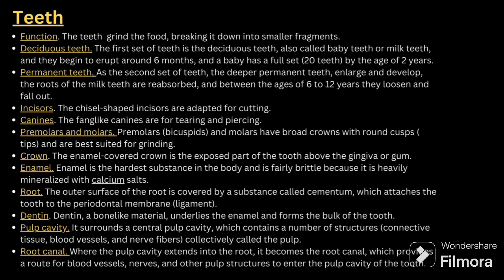Regarding teeth, the function is that teeth grind the food. We have deciduous teeth — the baby teeth — and permanent teeth, which develop from 6 to 12 years. Incisors are mainly for cutting, canines for tearing and piercing, and pre-molars and molars for grinding. The parts of a tooth include the crown, enamel, root, dentin, pulp cavity, and root canal. It is not necessary to explain all these points; saying the accessory part is teeth is enough.